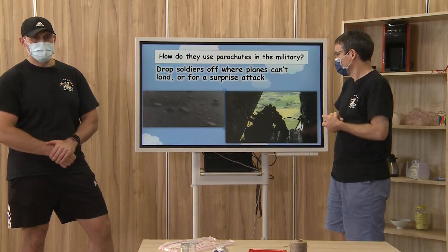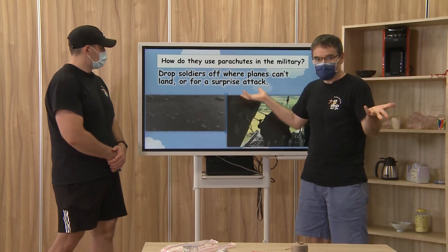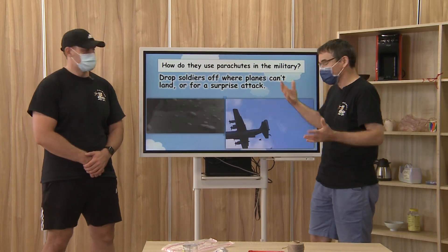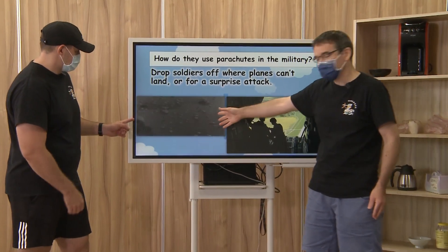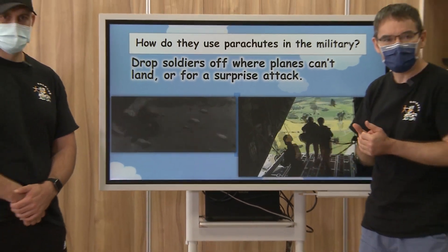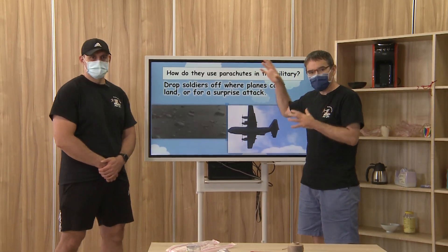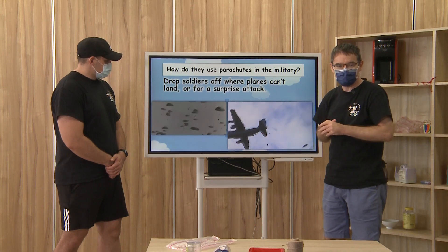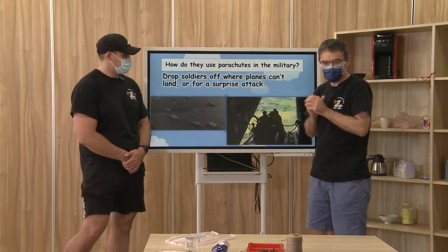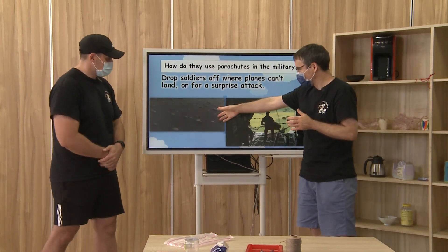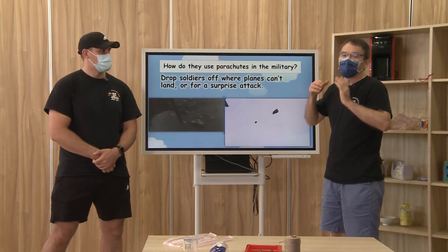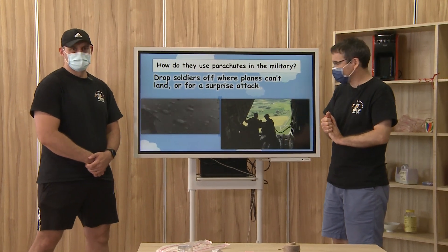So how do they use parachutes in the military? Well, they've used them for many years. They drop soldiers off where planes cannot land, or for a surprise attack. Like in this picture here — I think this was probably in World War II. America and maybe Great Britain dropped a lot of soldiers off into France around Germany, because they were trying to help Europe from Germany's invasion. So they dropped thousands of soldiers.